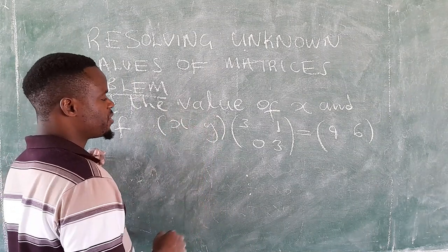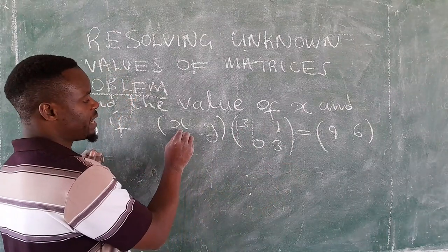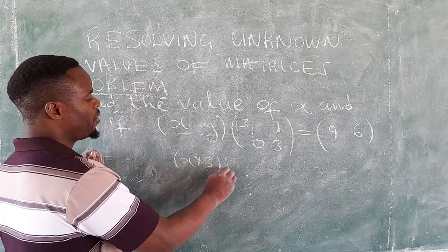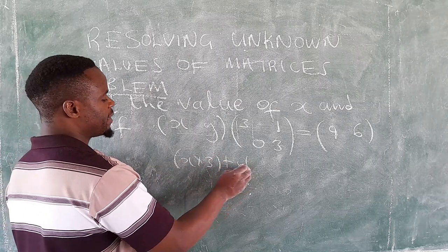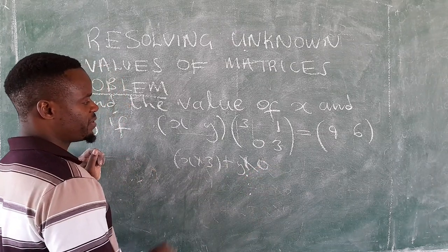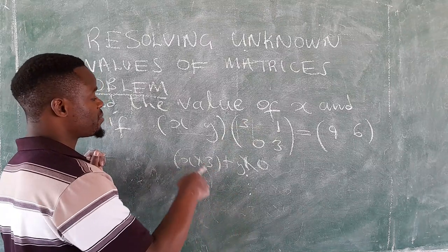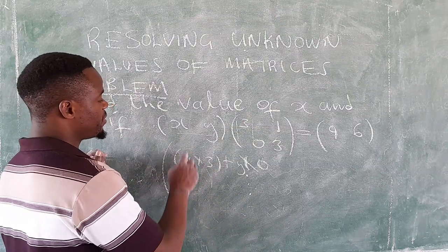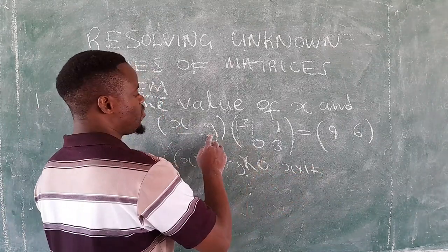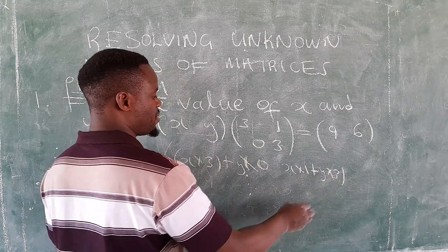So we say x, how do we multiply matrices? So it's row by column, row by column. So we're starting with x by 3, that is x times 3 plus y times 0. We're done with the first column, we move on to the second column. So we say this one is now being x times 1, then plus y times 3.